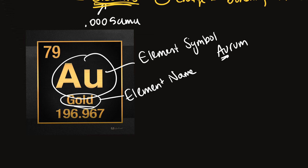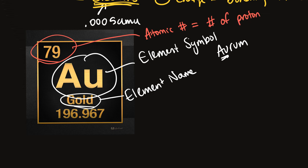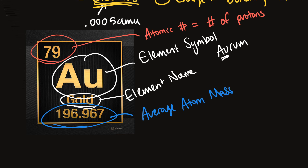This number here is a really important number — we call it the atomic number. The atomic number basically represents the number of protons that each atom of this element has. For gold, the atoms have 79 protons. The other number is what we call the average atomic mass — it's the mass of all the different types of gold and its percent abundance found in nature. We'll go into that number more deeply in another video.